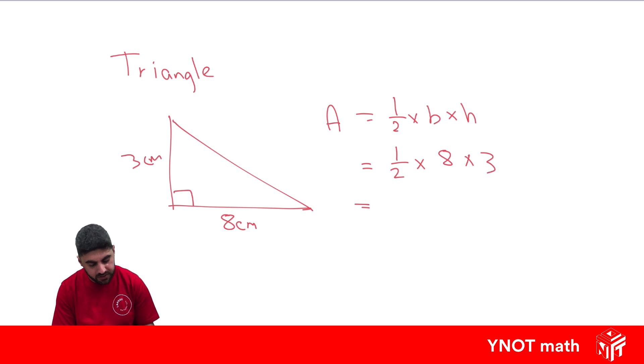A half times eight is going to give us four. We still need to multiply by three. And four times three is 12 centimeters squared for the area.